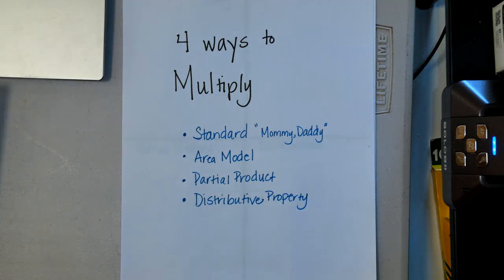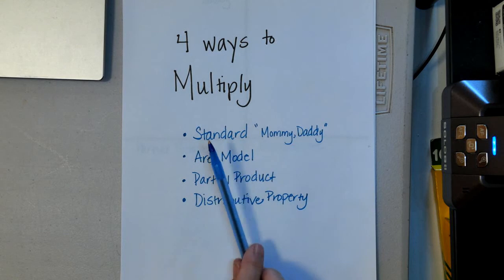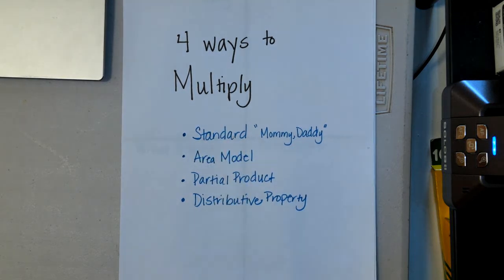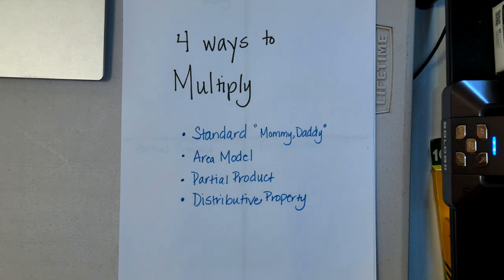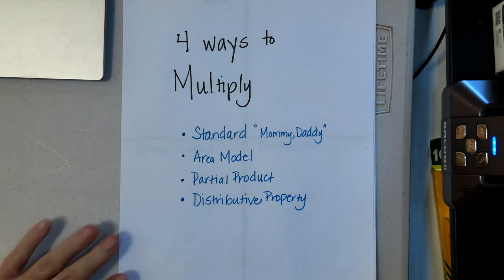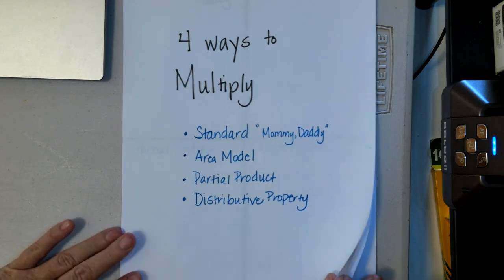For today I'm going to show you four ways to multiply. We're going to see an example of the standard method, which we call the mommy daddy method — it's probably how your parents learned to do it. We're also going to learn the area model, partial product, and distributive property. We're going to use the same problem so you can really see the difference between them.